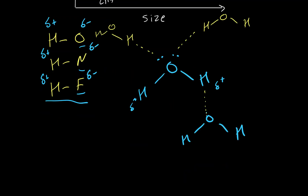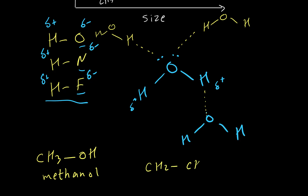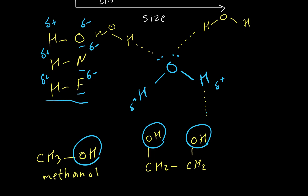If a molecule has more OH or NH groups in its structure, it will have stronger hydrogen bonding. For example, methanol has one OH group, while ethylene glycol has two OH groups. Because ethylene glycol has more OH groups, the possibility of forming hydrogen bonds is higher, so we expect ethylene glycol to have a higher boiling point than methanol. Thank you for watching - please subscribe to our YouTube channel for more videos.